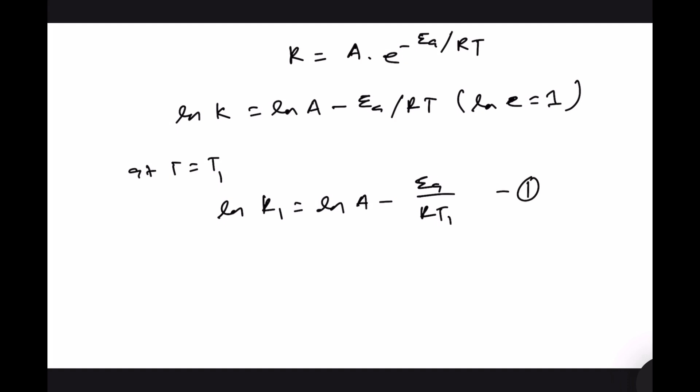At T equal to T2 ln k2 equal to ln A minus Ea by RT2 that is equation 2. Equation 2 minus equation 1 is going to be ln k2 by k1 divided by Ea by R 1 by T1 minus 1 by T2.